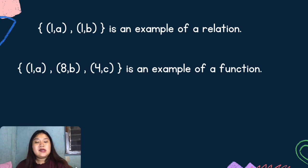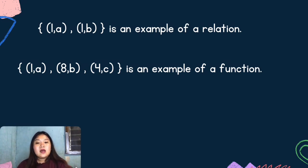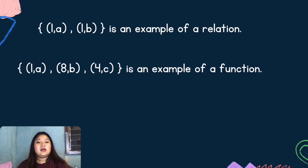As we can see, sa example ng function, iba-iba ang first element ng bawat pair, which simply explains kung paano nangyari na all functions are relations but not all relations are functions.